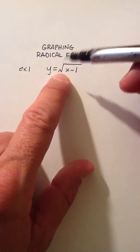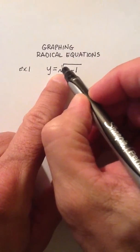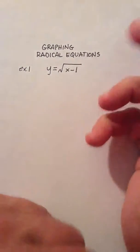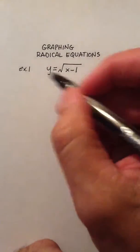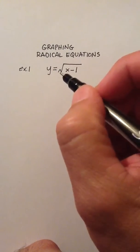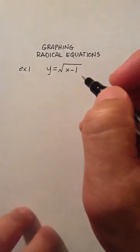For example, if my index here were a 3, remember this little number up here is called an index, and when there isn't one there, you assume that it's a 2. So in this particular case, I'm just going to solve what's called a square root, and in this particular case, it's y is equal to the square root of x minus 1.